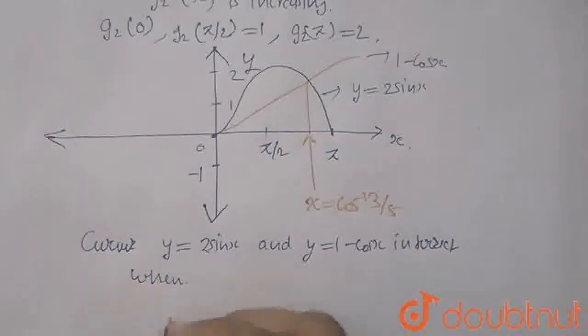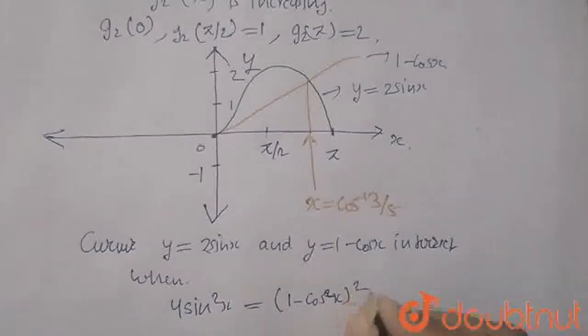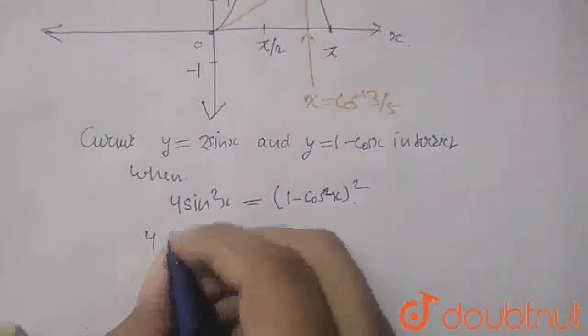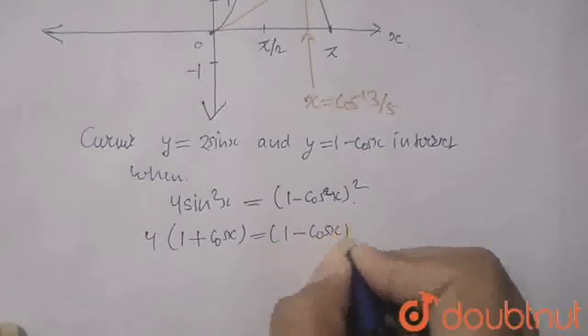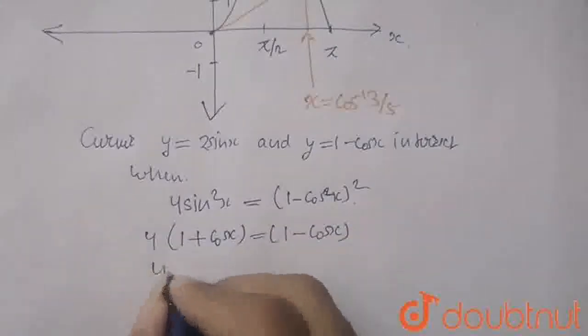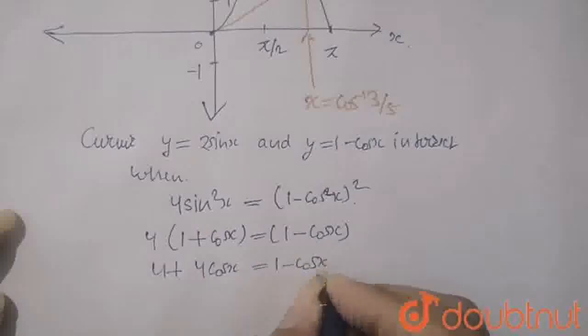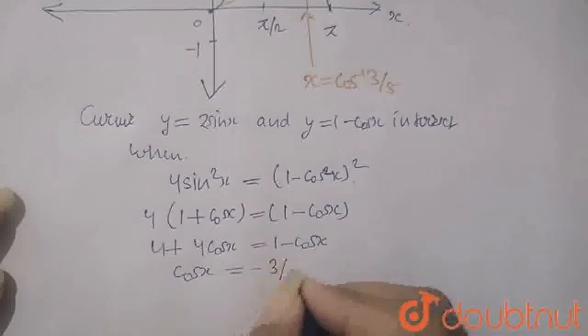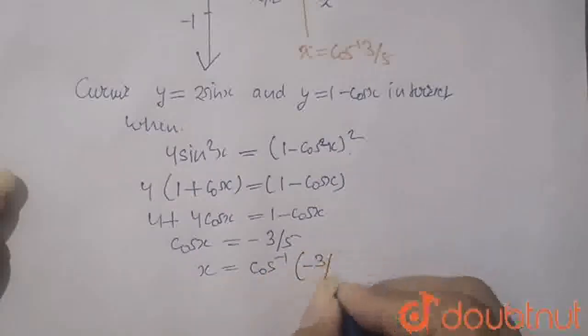When? When 4 sin square x is equals to 1 minus cosx whole square. Actually, at this point they are intersecting. So when you simplify it, you will write here 1 plus cosx equals to 1 minus cosx. And from this what you will get? 4 plus 4 cosx equals to 1 minus cosx. And here you will get cosx equals to minus 3 by 5. And x equals to cos inverse minus 3 by 5.